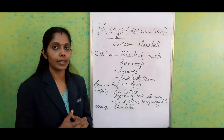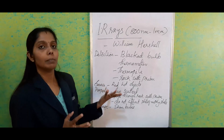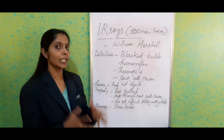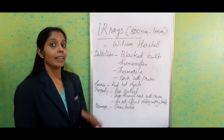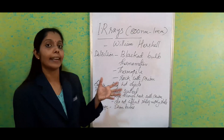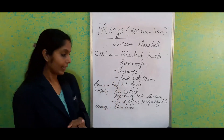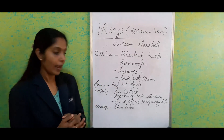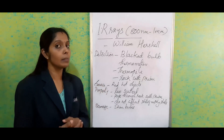The source of infrared radiation is mostly red hot objects or hot materials. For properties, infrared shares the common electromagnetic wave properties, plus some special ones: it is least affected by the photographic plate, and it is the least scattered ray in the electromagnetic spectrum because of its high wavelength. The harmful effect of infrared radiation is that it causes skin burns.